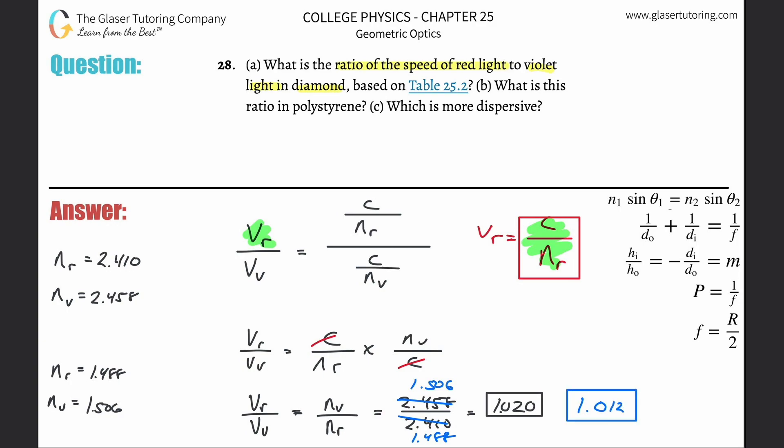So then it says, which is now more dispersive? It's asking which medium, diamond or polystyrene. Basically, anytime you have a larger difference in the velocities of light, that represents more dispersion.